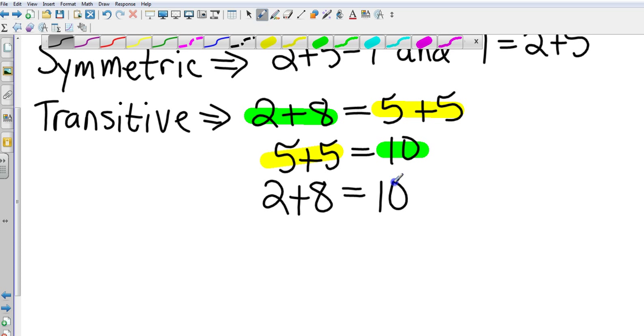Transitive, again, three parts. Two plus eight equals five plus five. If five plus five equals ten, then two plus eight must also equal ten because they're equal to each other.